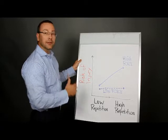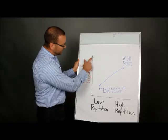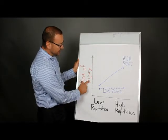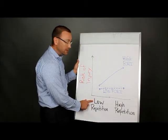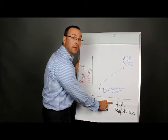Here's the graph that illustrates that interaction. On the vertical axis, we have risk of injury. On the horizontal axis, we have two categories: the first one being low repetition, the second one being high repetition.